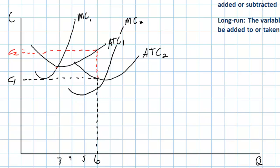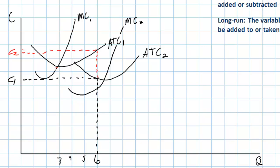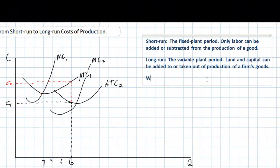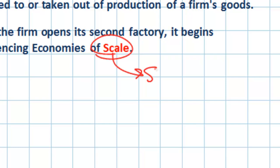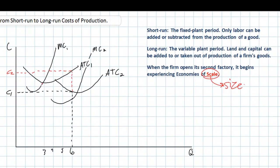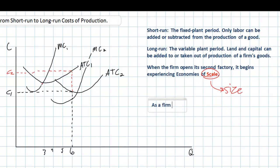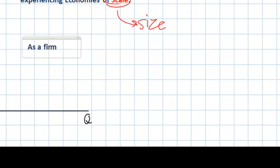Why did the average total cost of airplanes fall when this firm opened its second factory? Using economics terminology, we say that when the firm opens its second factory, it begins experiencing economies of scale. The word 'scale' refers to size. When this firm opens a second factory, it becomes a bigger firm — it is able to produce airplanes at a lower cost than when it was smaller. As a firm grows larger, its average variable costs and average fixed costs tend to grow smaller.